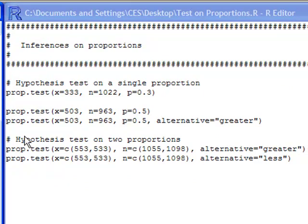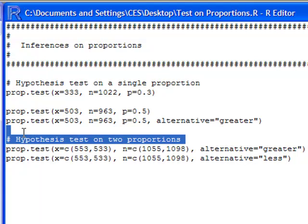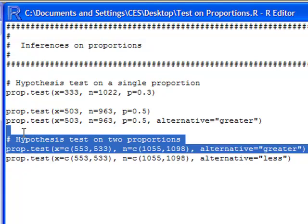Okay, another thing we might be interested in is the difference in two proportions. We can use prop.test for this as well. Now, if I come over here and look at my next line that I have here, you can see I have prop.test. And then here on the inside, I have x equals, I have c, which means a column. It's going to be two values. So I have 553 and 533. And for the n, I have c, which is a column, 1055 and 1098.